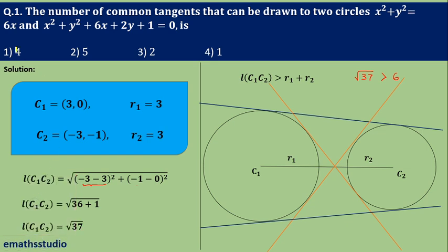I hope all of you understood this. We identified that C1C2 > r1 + r2, confirming the circles are disjoint, and for disjoint circles two direct and two transverse common tangents exist — total four. This is the application of the theory in problems. Thank you all.